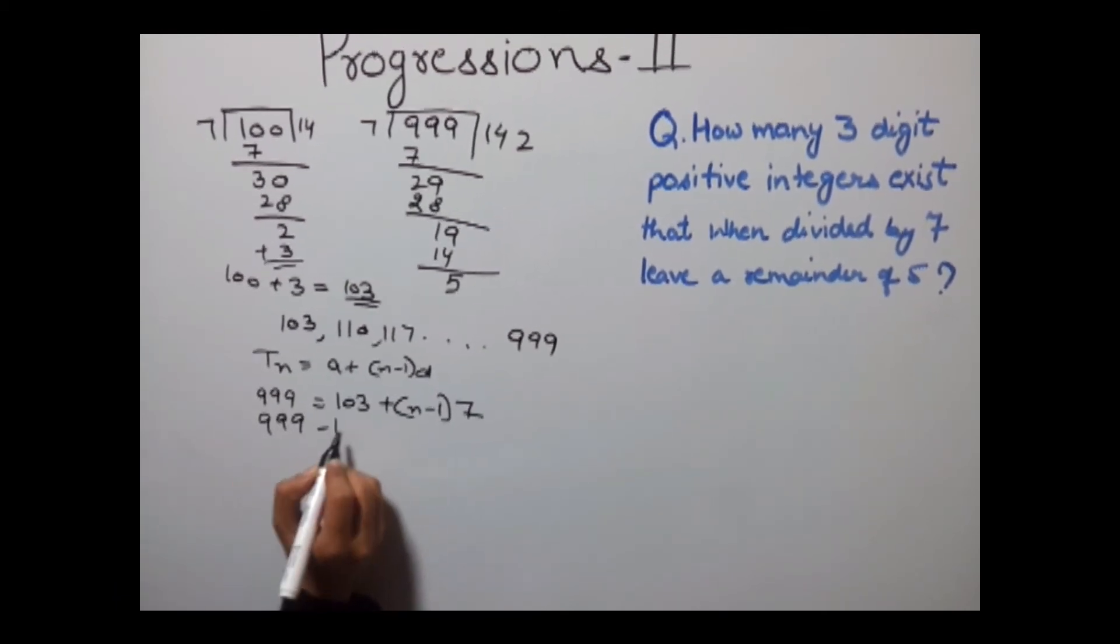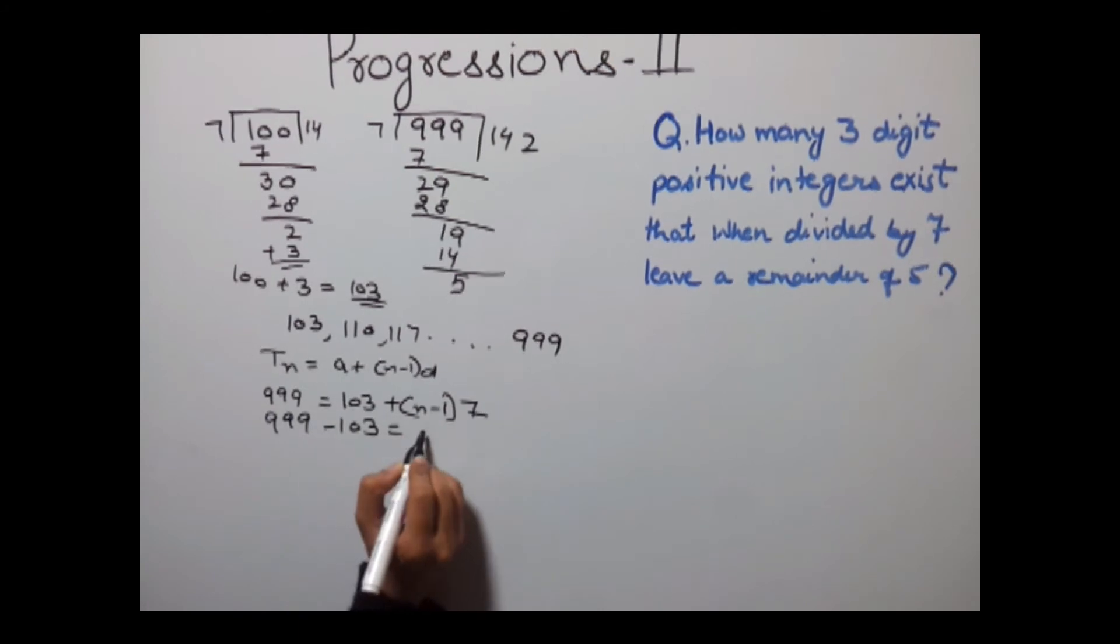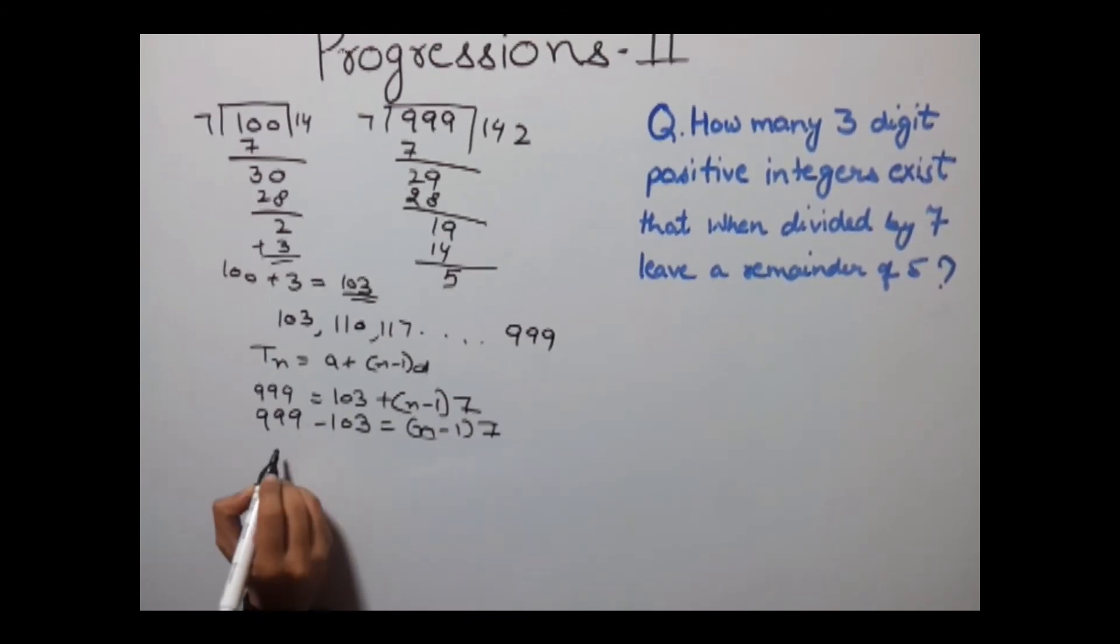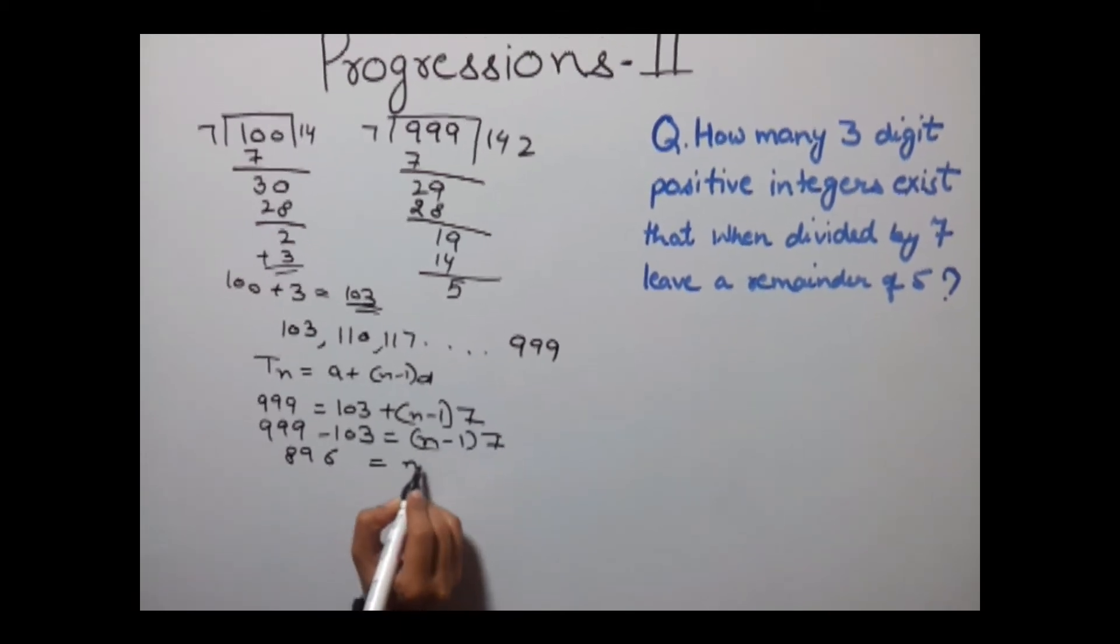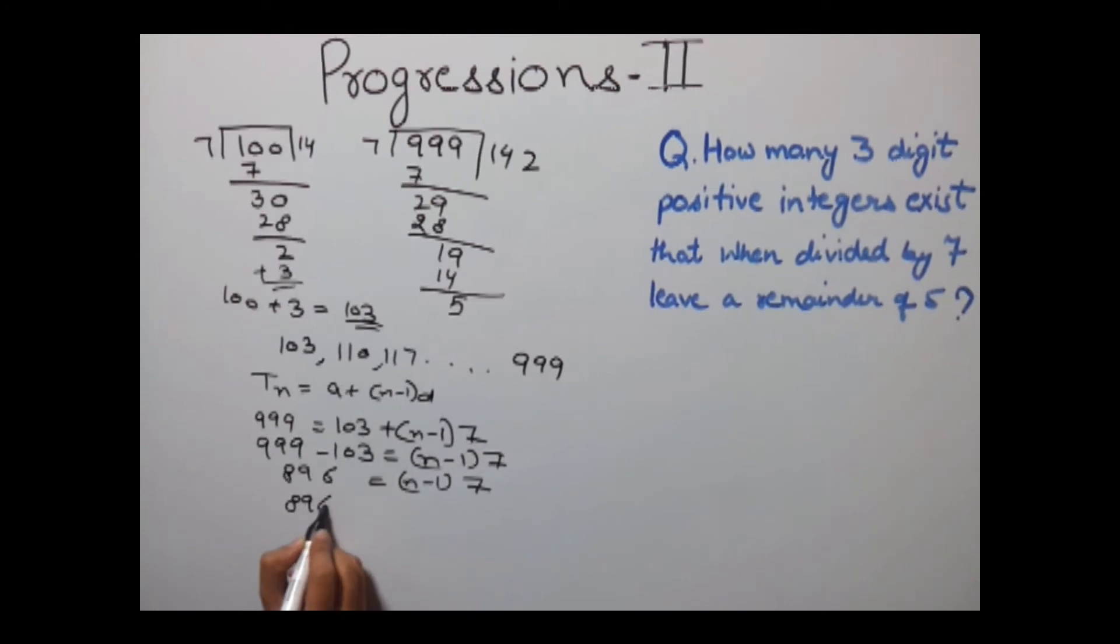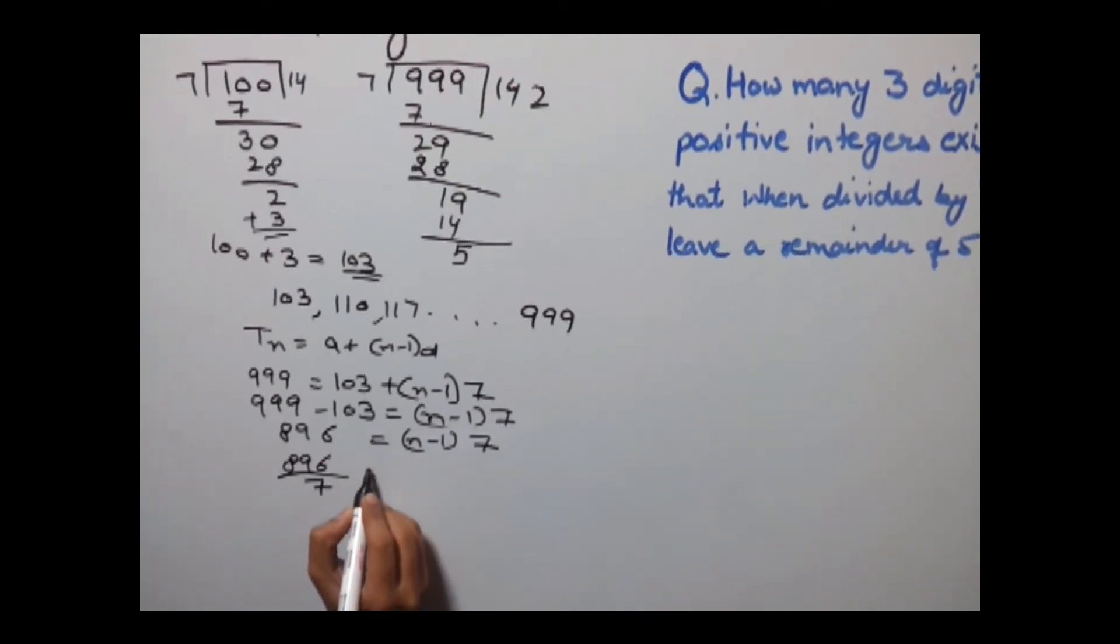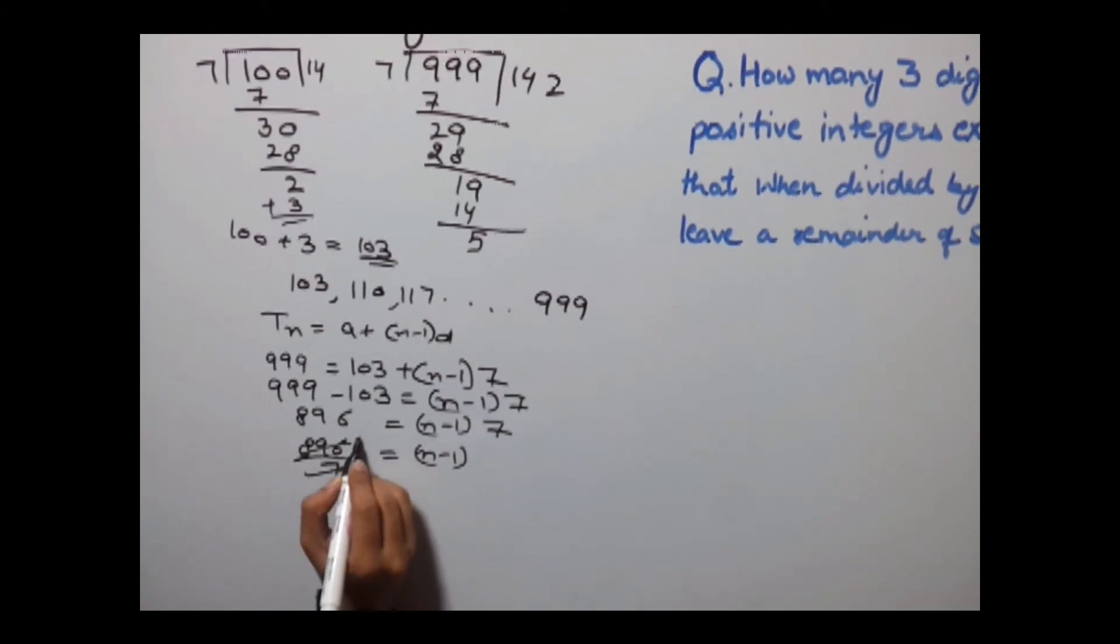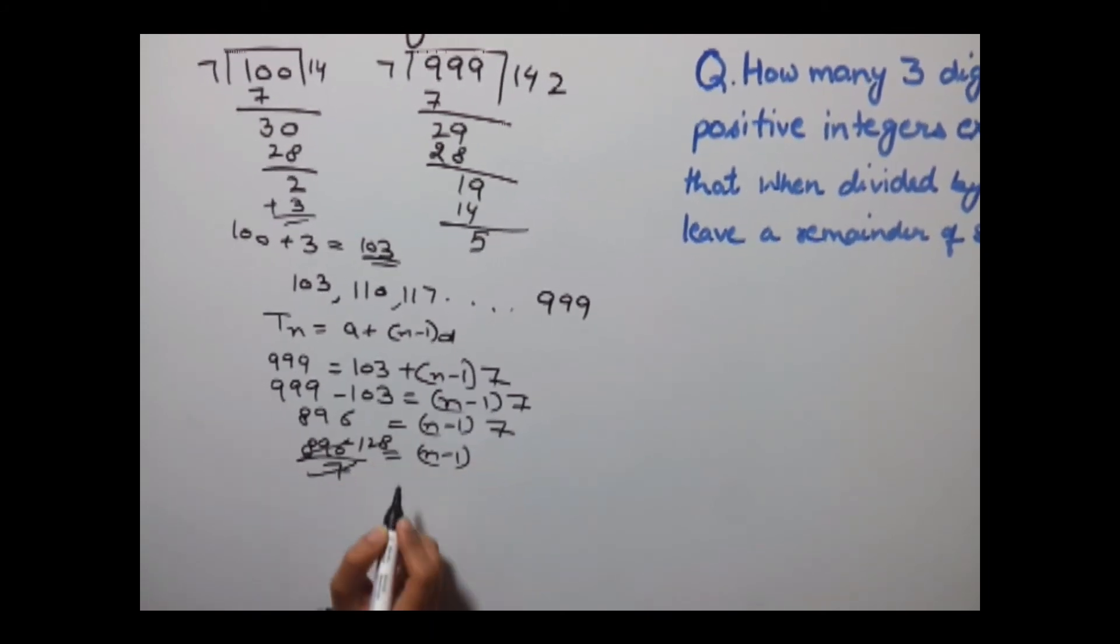So solving this: 999 - 103 = (n-1)×7. You'll get 896 = (n-1)×7. Now 896 divided by 7 equals n-1. Cancel it, you'll get 128.